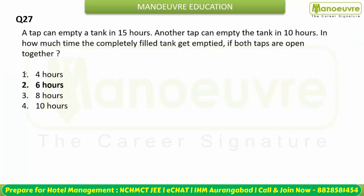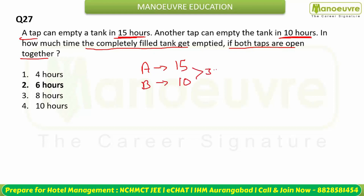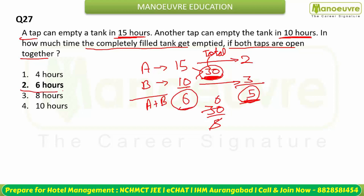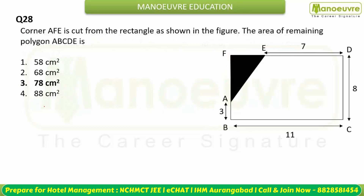One tap can empty a tank in 15 hours, another in 10 hours. Assume total work = 30 units. First tap does 30/15 = 2 units/hour; second does 30/10 = 3 units/hour. Together they do 5 units/hour. Time to empty = 30/5 = 6 hours.